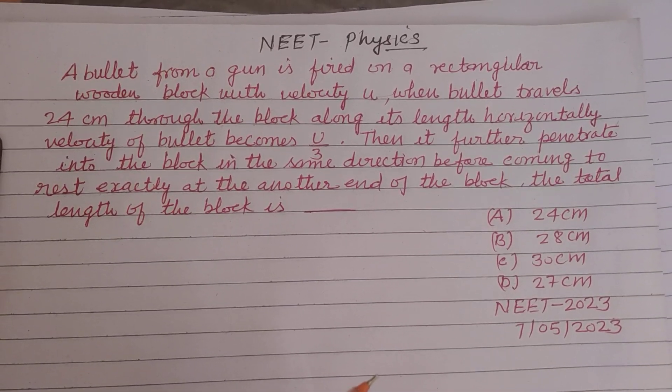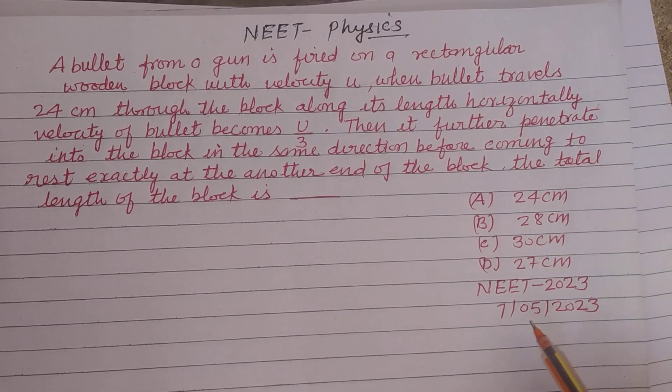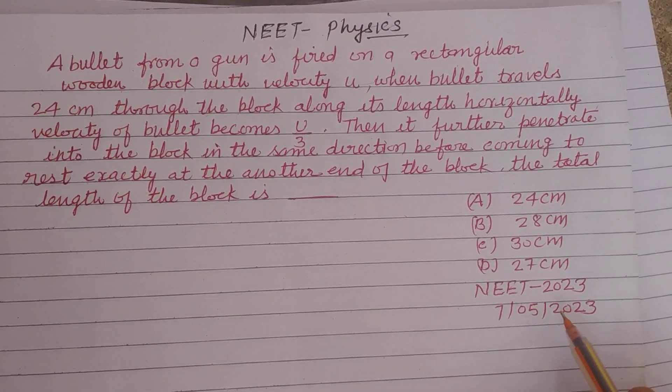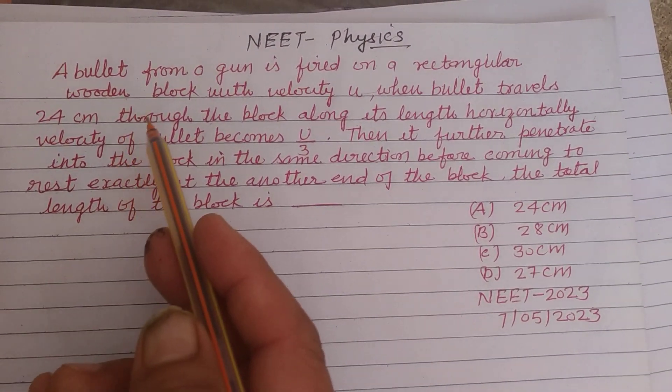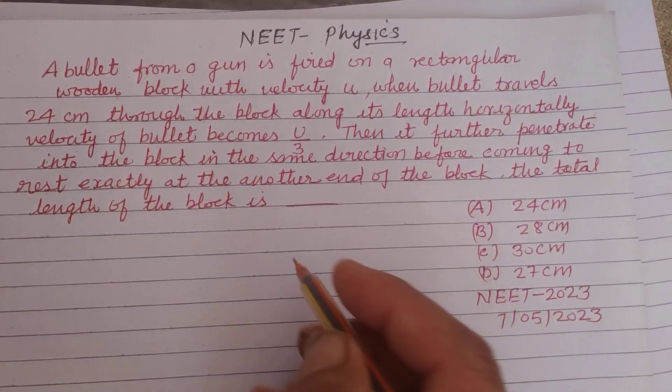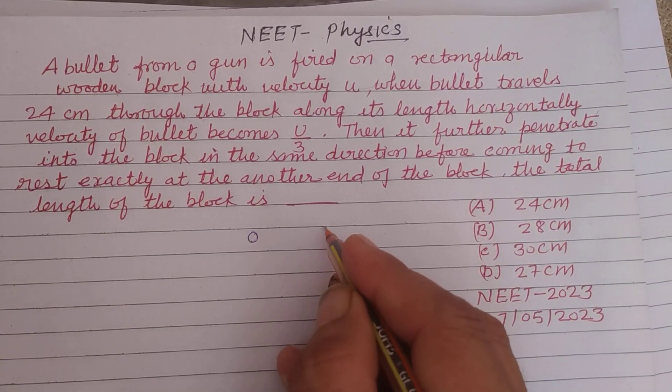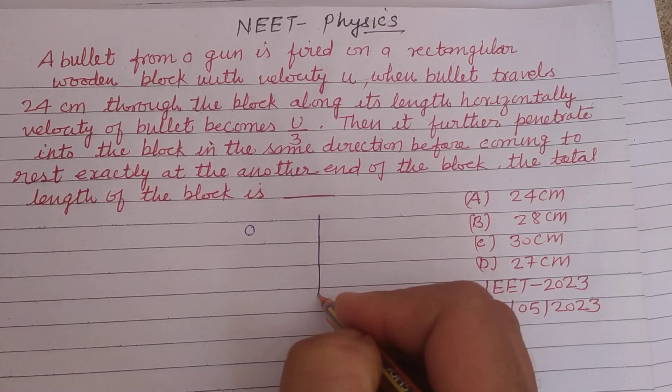Hello students and welcome to this YouTube channel. Question from NEET 2023 held on 7 May 2023. A bullet from a gun is fired on a rectangular wooden block.